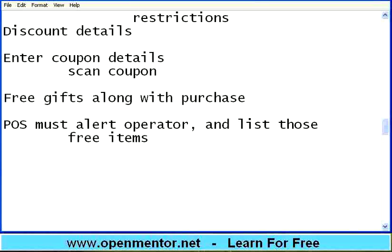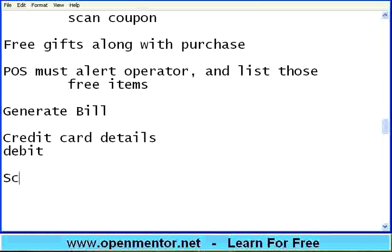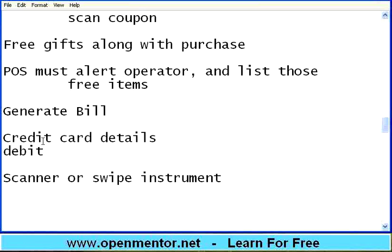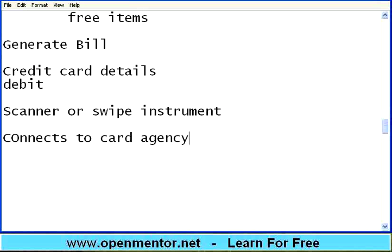Once all these things are done, it should generate a bill. Then it should get credit card or debit card details. Usually there will be a scanner or swipe instrument for the credit card, which will get connected to the billing software machine. Based on your credit card details, that credit card number will be available in the system. Then it will authenticate with the credit card agency, connect and get approval. Once approval is done, print the bill.